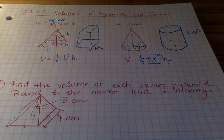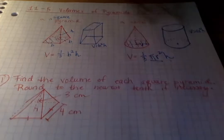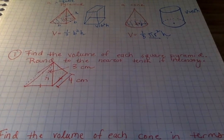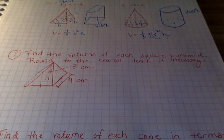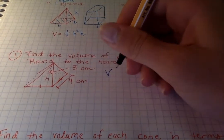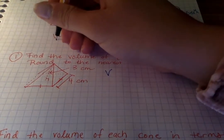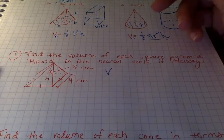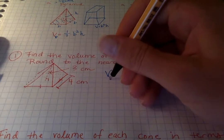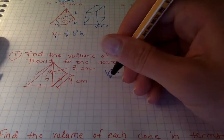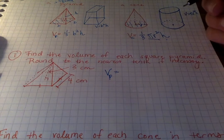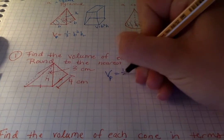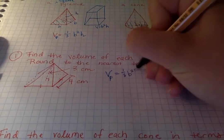All right, now that we understand those formulas, let us look at problems one and two. So the first one, we need to find the volume of each square pyramid and round to the nearest tenth if necessary. So we need our square pyramid formula. Volume of a pyramid, and the subscript is a tiny letter that goes underneath the V. Volume of a pyramid is one-third base squared times the height.